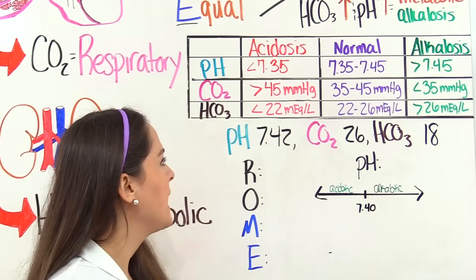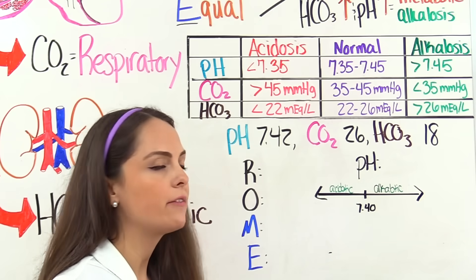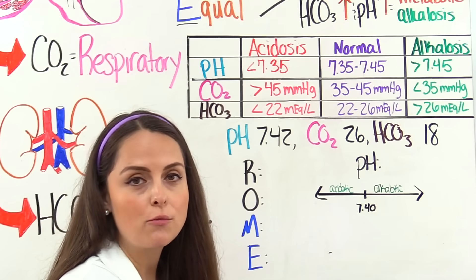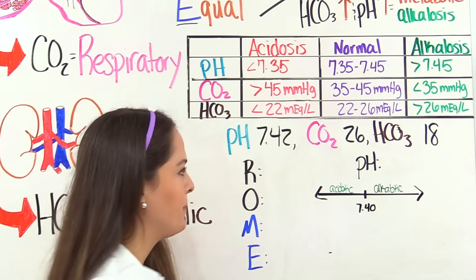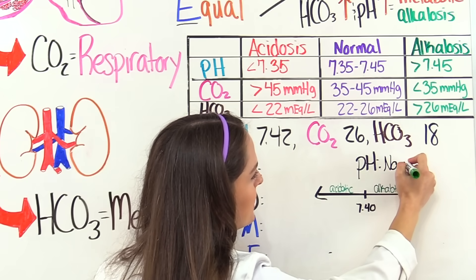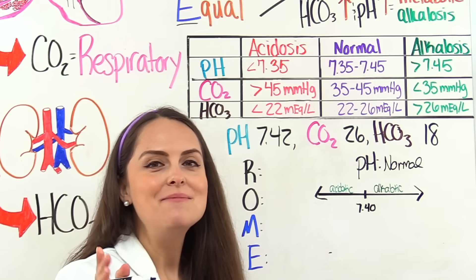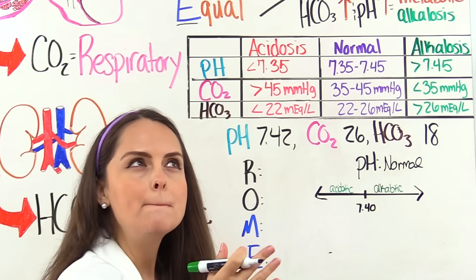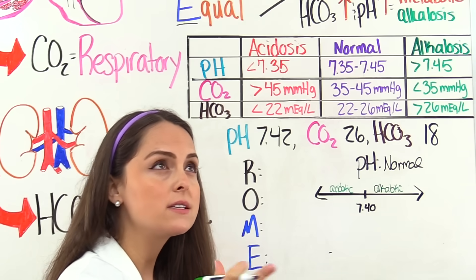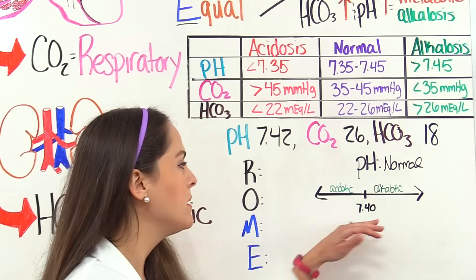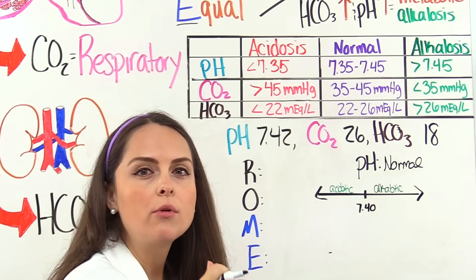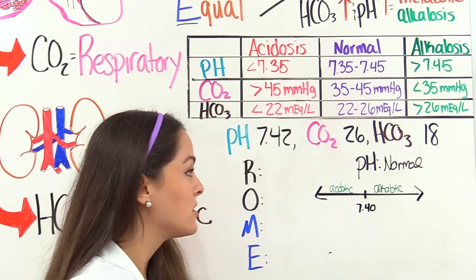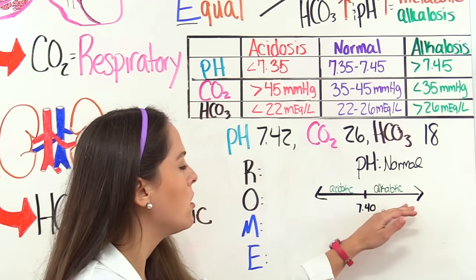Our next problem: blood pH is 7.42, CO2 is 26, and bicarb is 18. Normal blood pH is 7.35 to 7.45. We're at 7.42, so we're normal. Right now, if you're thinking about compensation, you should be thinking — full compensation. But we've got to determine: is this a respiratory or metabolic problem? When blood pH is normal, what side of normal are we on? The absolute normal blood pH is 7.40, so anything greater is alkalotic. We're at 7.42, so we're on the alkalotic side of normal.